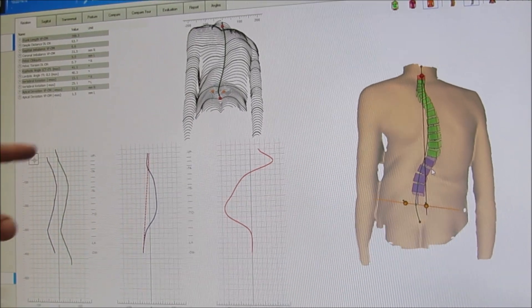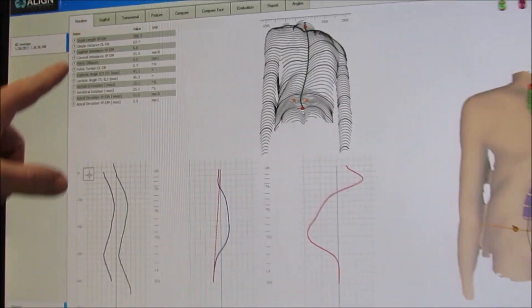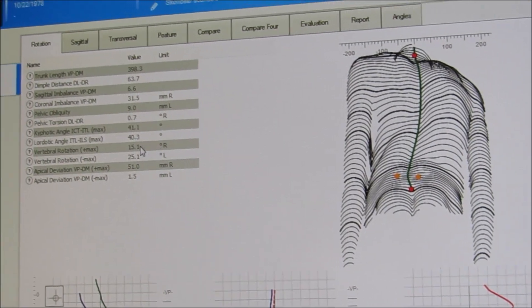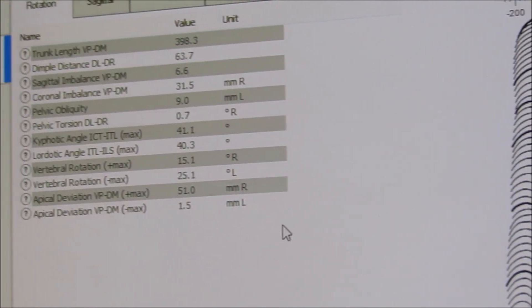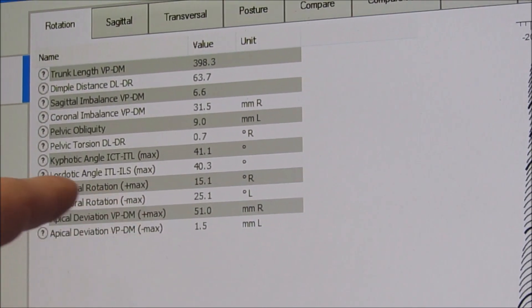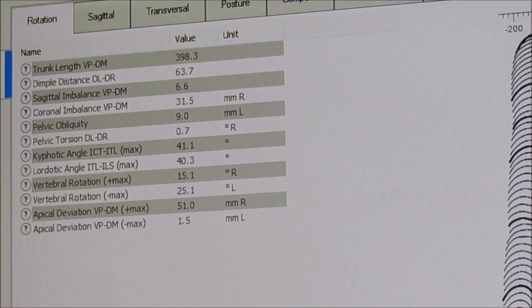Up here we get a printout of some information on specific numbers based on things that we want to measure. We can look at rotation of the spine. We can look at kyphosis and lordosis.